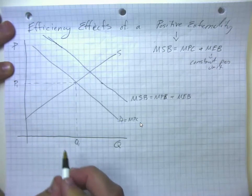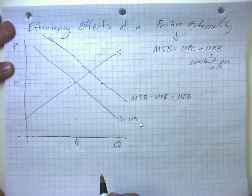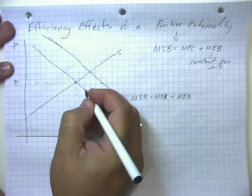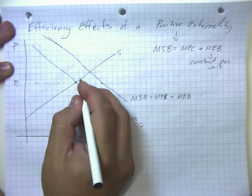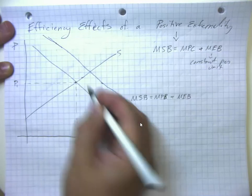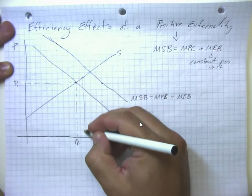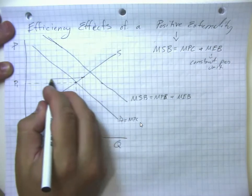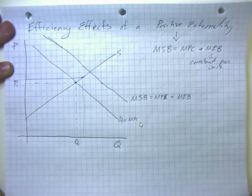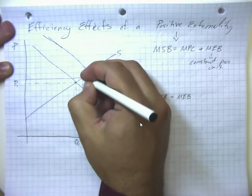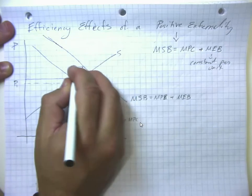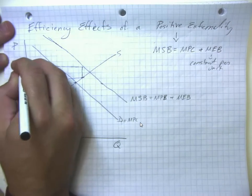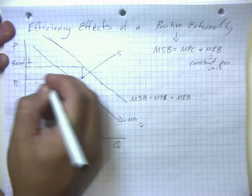Now what we're going to see here is some inefficiency in the market equilibrium. When we think about the efficient quantity, if we think about this unit of quantity right down here, here's the cost to produce that unit. How much of society's resources are used up when we produce that unit. Up here is the benefit.